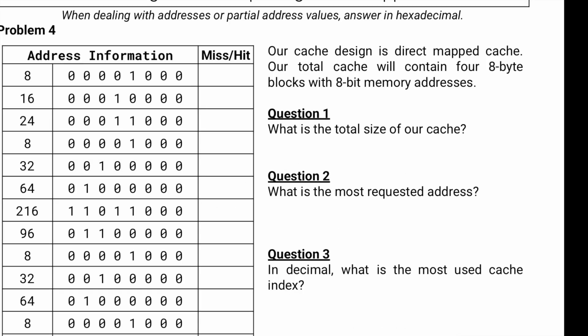We know that our cache design is a direct mapped cache, which means later if we need to calculate the tag, index, and offset, this will help us. Our total cache will contain four 8-byte blocks with 8-bit memory addresses.